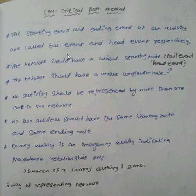Learn the basic concepts in a network diagram in CPM. First, the starting event and ending event of an activity is the start event and end event respectively. The network has a unique starting and ending node — the start event and end event.